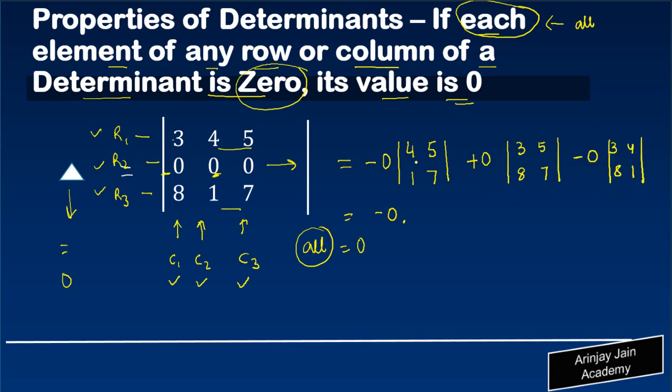We get minus zero times whatever the value is here - in this case, 7 times 4 is 28 minus 5 - plus zero times 21 minus 40, minus zero times 3 times 1, which gives 3 minus 32. When you multiply zero with these values, you get minus zero plus zero minus zero. All three give a value of zero. So when all elements of a given row are zero, the value of the determinant is zero.